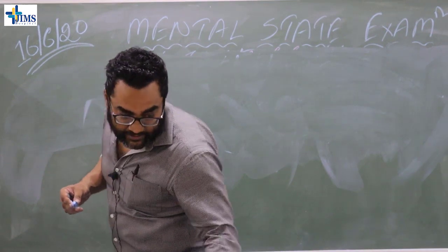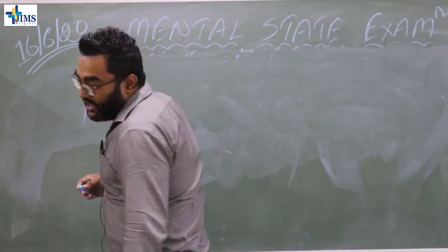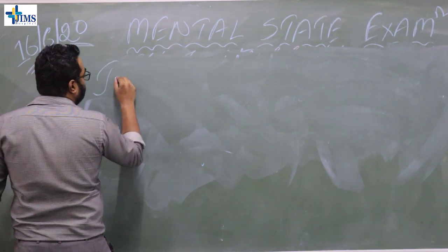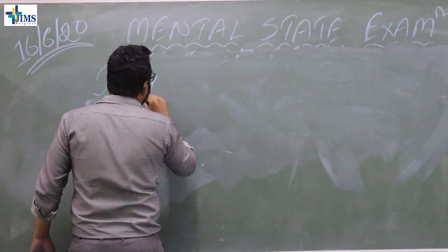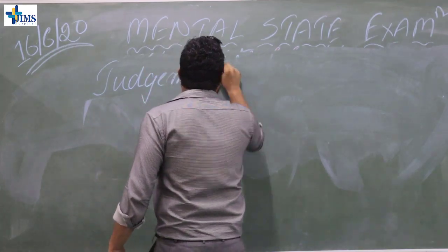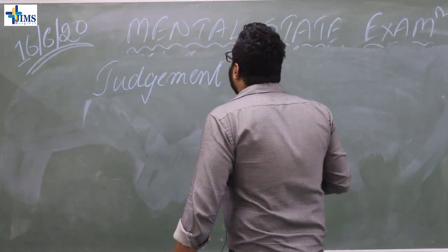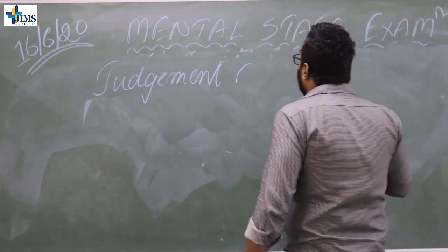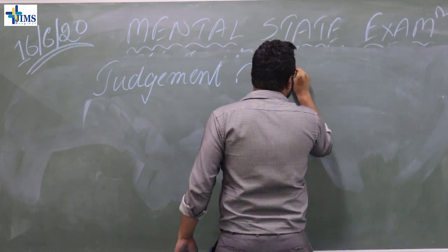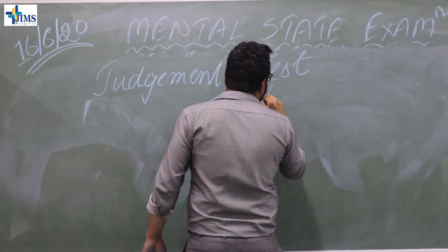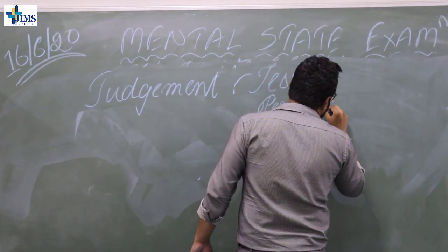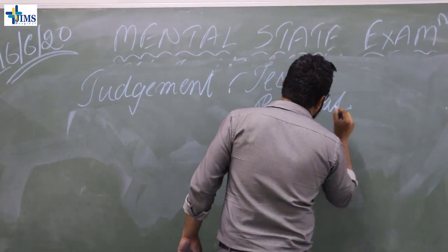After abstract thinking, we come to judgment. Judgment is divided into three types: test, personal, and social.